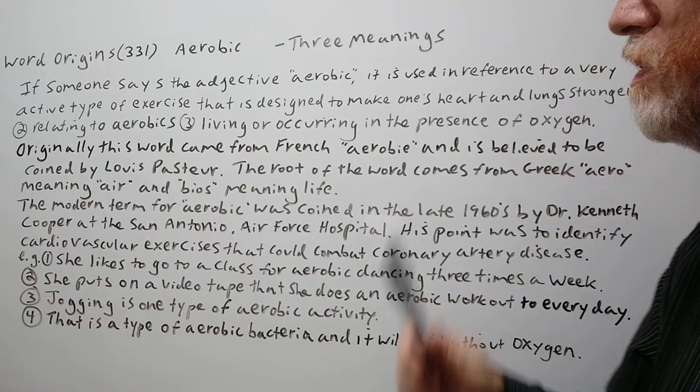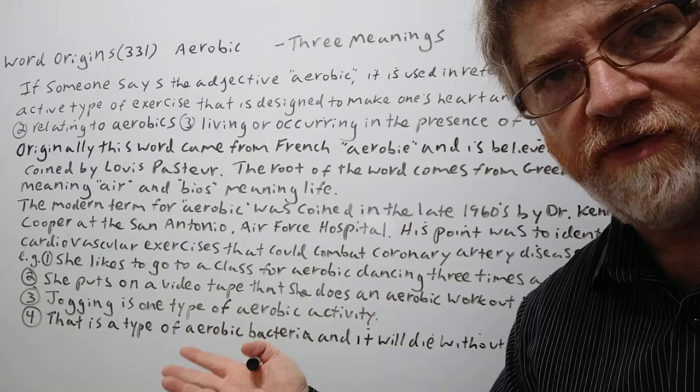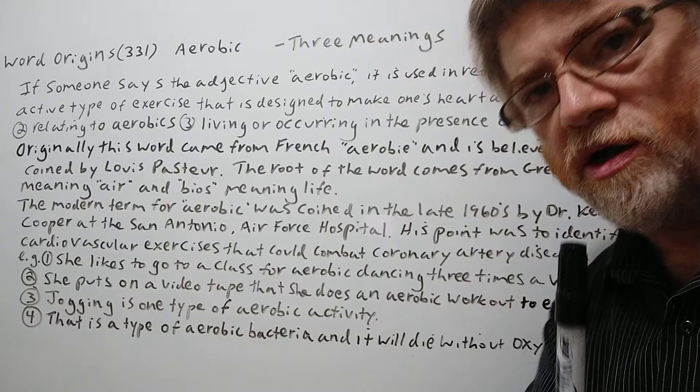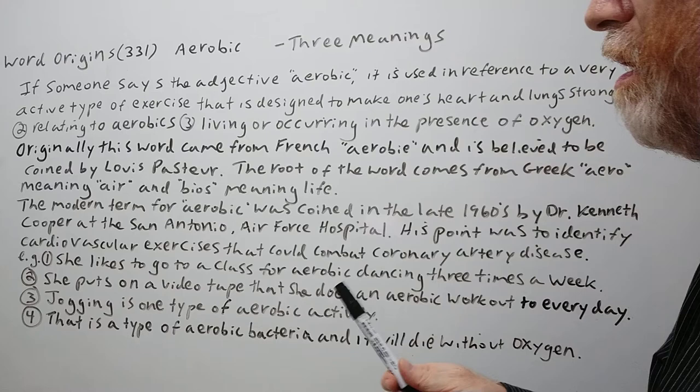Let's get right to it. If someone says the adjective aerobic, it is used in reference to a very active type of exercise that is designed to make one's heart and lungs stronger. The second meaning is simply the adjective of the activity or sport of aerobics. The third is the technical meaning — this means living or occurring in the presence of oxygen, in case there are organisms that need oxygen to live.